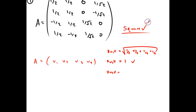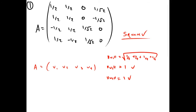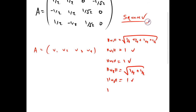Next we're going to check the magnitude of the second column, and it's going to be 1/4 plus 1/4 plus 1/4, square root of 1, which is 1. Then we check the magnitude of the third column: 0² plus 0² plus (1/√2)² = 1/2, square rooted, which is 1. And by the same reasoning, v4 is going to have a magnitude of 1. So all of our columns have a magnitude of 1.